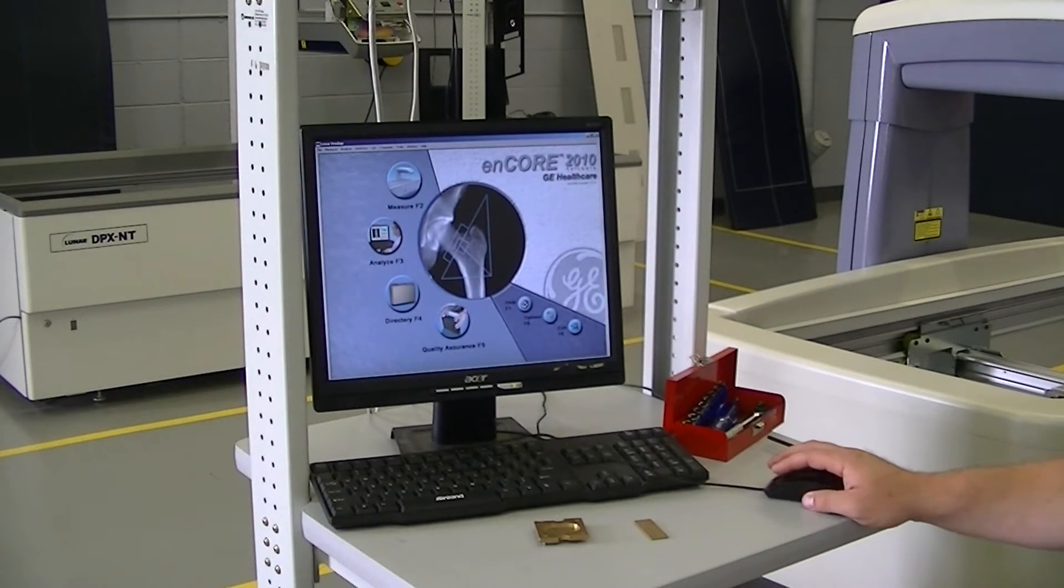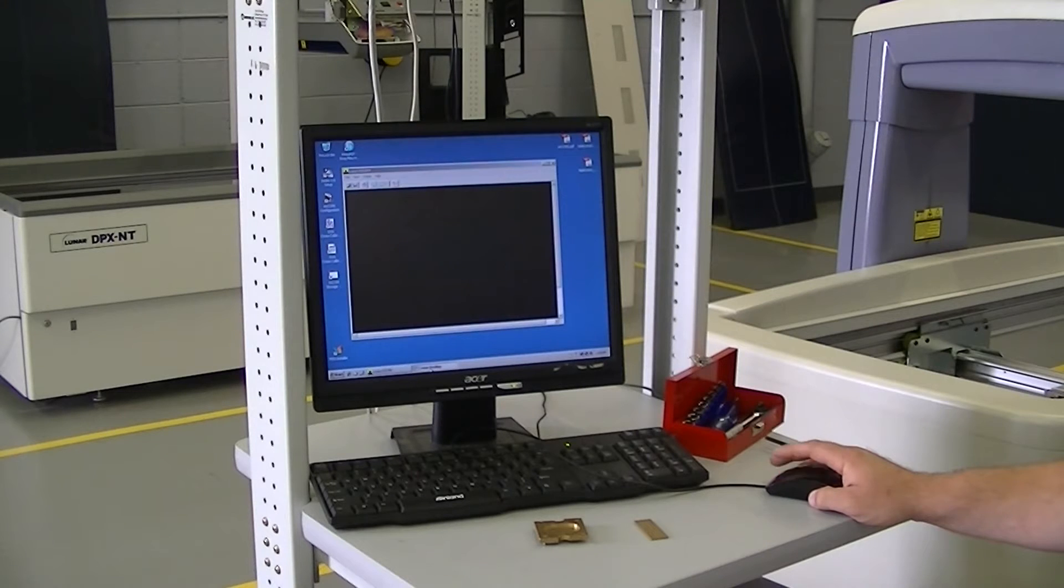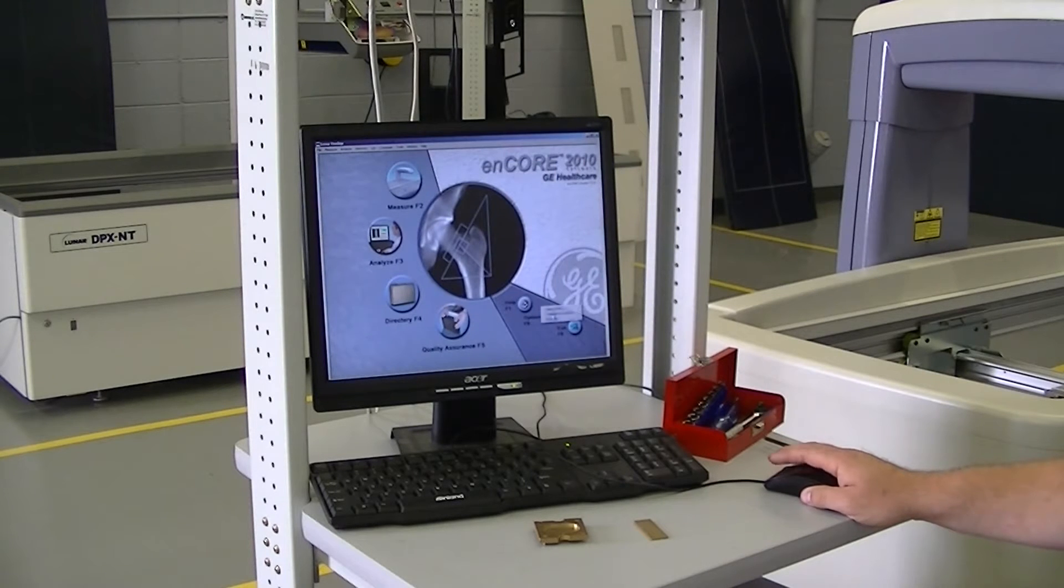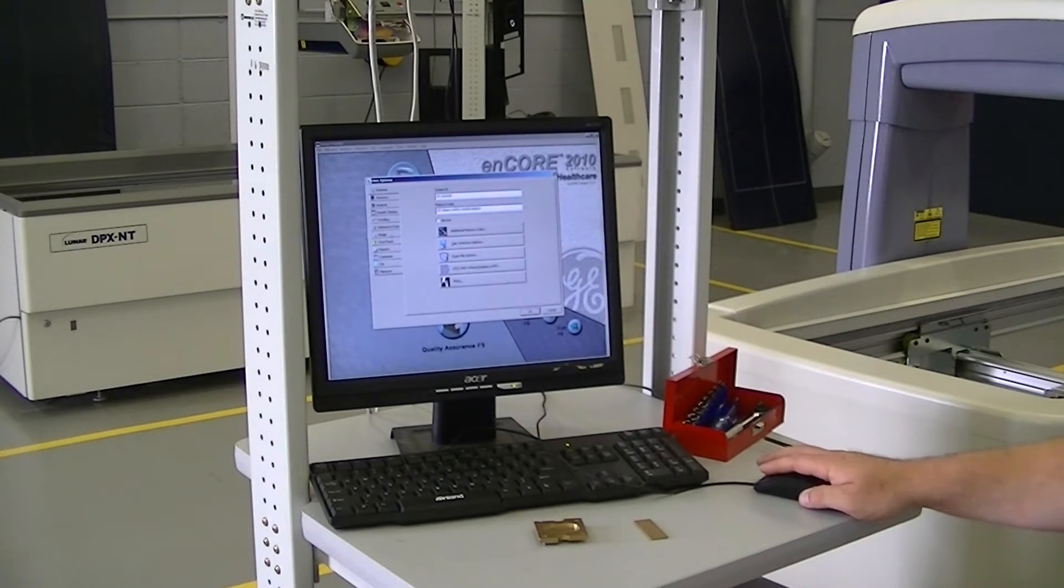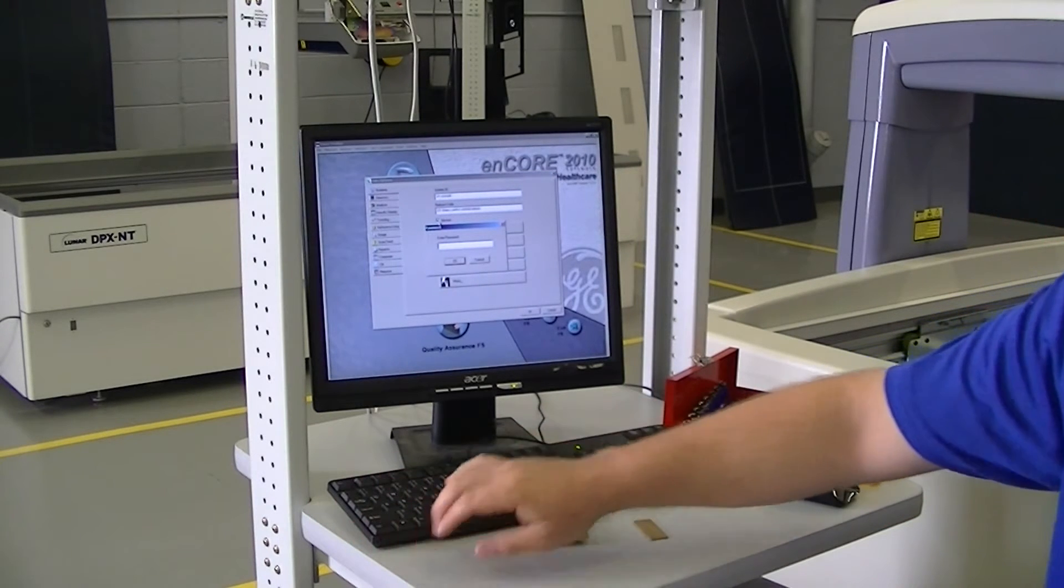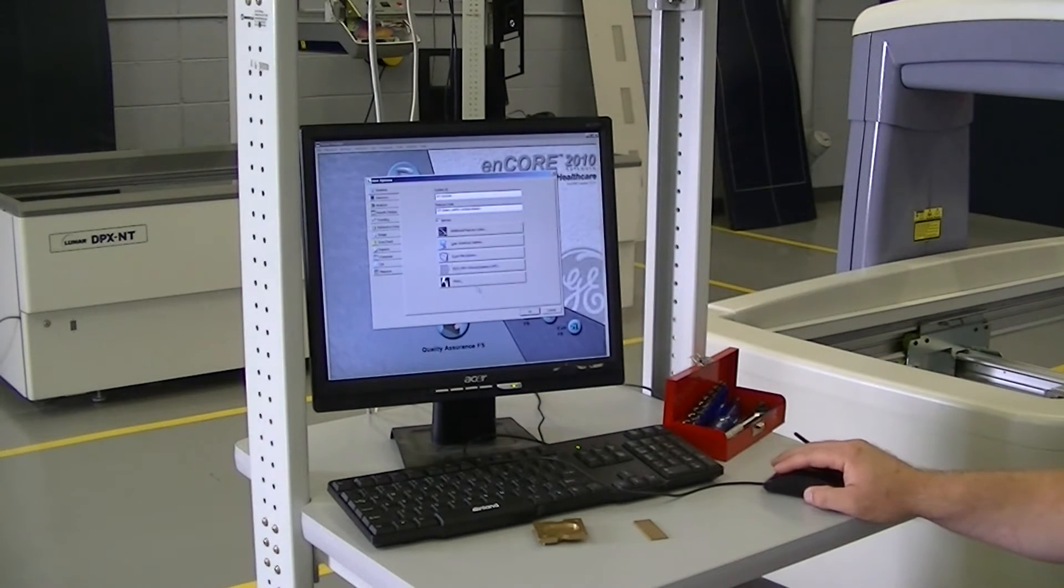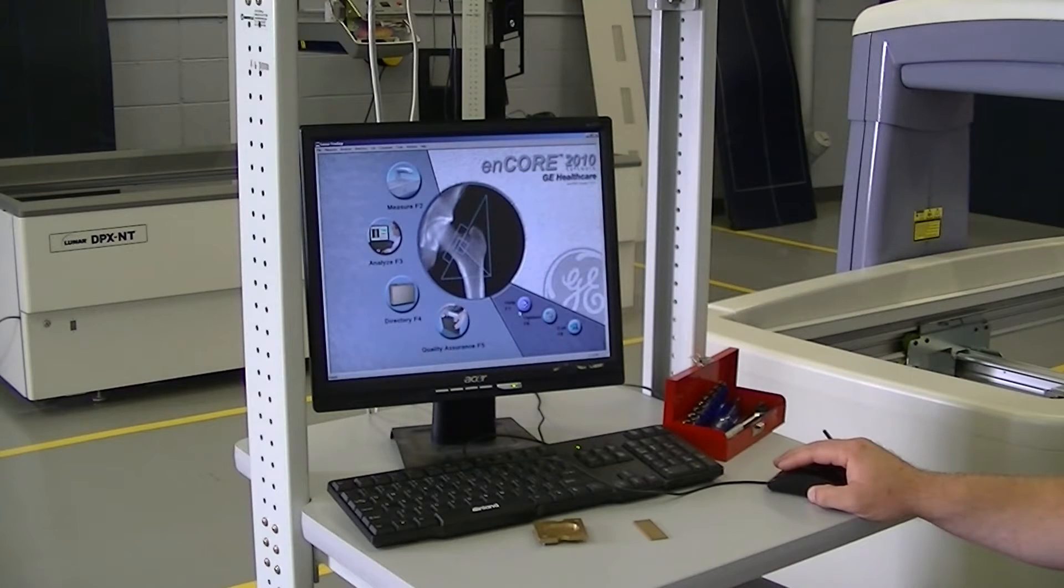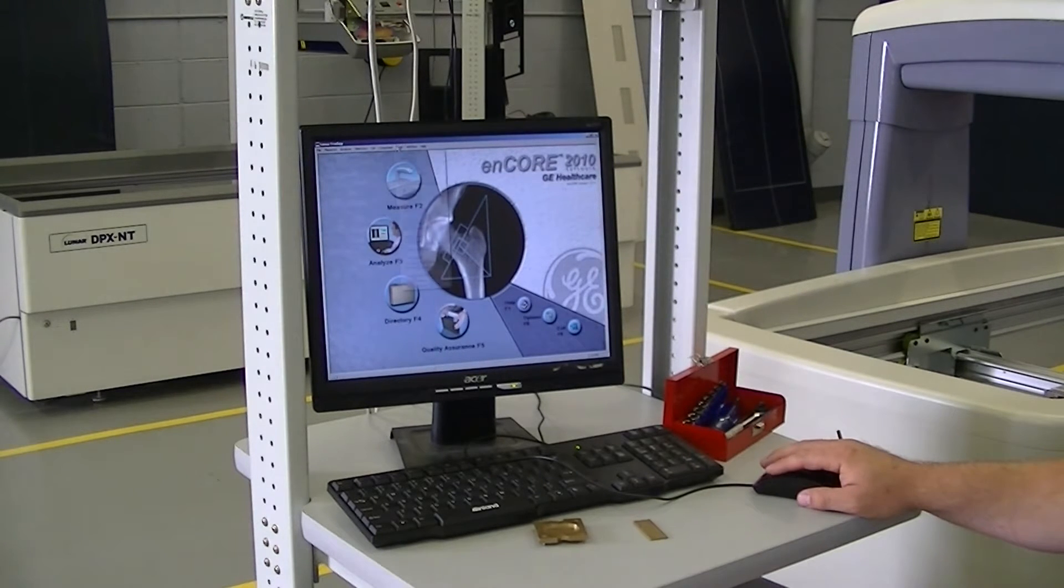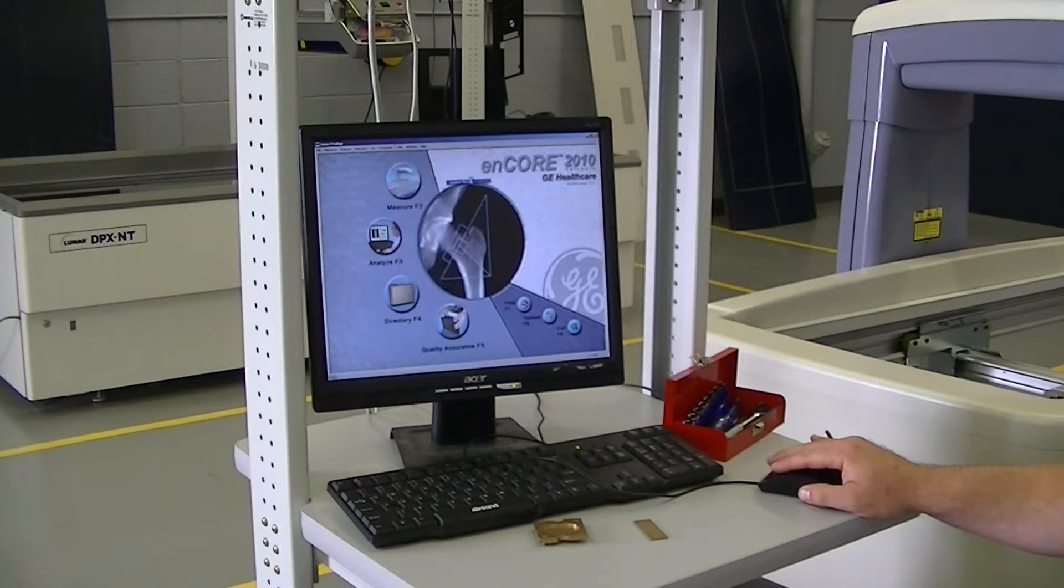The first thing you'll want to do is open the Encore software from the desktop. From here, go to Options, User Options, click on the Systems tab, and enable the service. You want to enter the password, which is 'badger'. Okay, now we are in service mode. From here, the first thing we're going to do is go to Tools, Diagnostics, Scanner Motion.